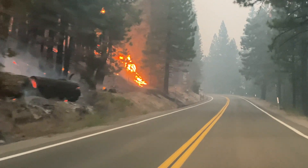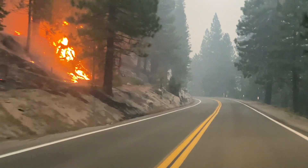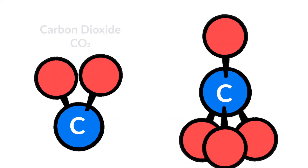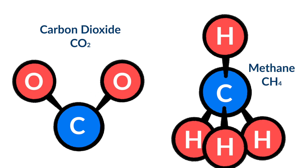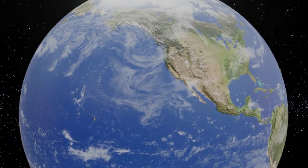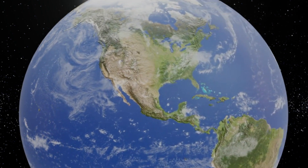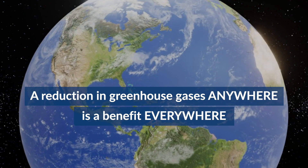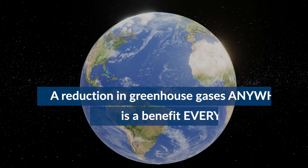These disruptions include increased and more severe droughts and storms. The primary greenhouse gases are carbon dioxide (CO2) and methane (CH4). Because greenhouse gases mix evenly throughout the atmosphere, they have a global impact. This is why a reduction in greenhouse gases anywhere is a benefit everywhere.